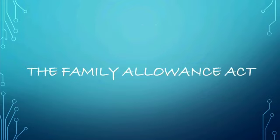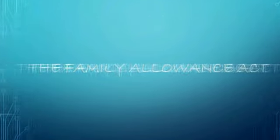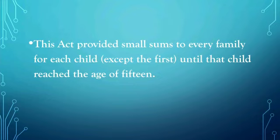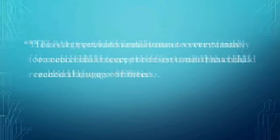The Family Allowance Act provided a small sum of money to every family for each child except the first one, until the child grew up to 15 years of age.